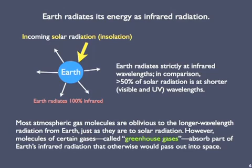Most atmospheric gas molecules on Earth are oblivious to the passage of the longer wavelength radiation from Earth, just as they are to the shorter wavelength solar radiation. However, molecules of certain gases, called greenhouse gases, absorb part of Earth's infrared radiation that otherwise would pass out into space. As we'll see, this is the key to not just Earth's climate, but also to life on Earth.